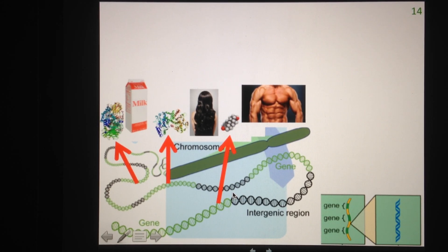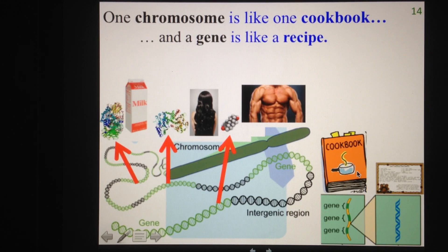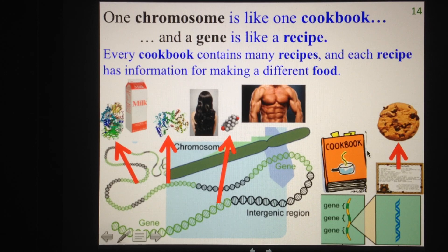To help you keep track of how all these terms interact, one way to think of it is to think of a chromosome as being like a cookbook, and a gene as being like a recipe. This makes sense because every cookbook contains many different recipes, just like every chromosome contains thousands of genes. And every recipe has information for making a specific food, just like every gene has information for making a specific protein.